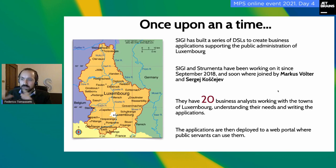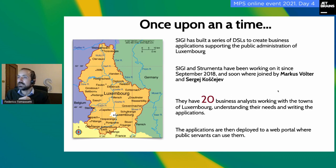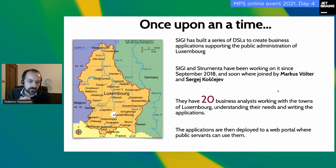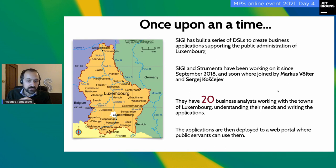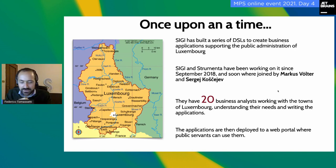Alex already very well displayed the example. Just to say a couple of things about the project for people who connected late or will watch this later on YouTube: once upon a time, Ziggy decided to build this DSL to create business applications for the public administration of Luxembourg. I flew there in September 2018. We had a few meetings and were soon joined by Markus Wolter and Sergey Kosheyev, and we built this DSL. I knew that 20 business analysts were using this DSL, but Alex said that now there are 40 to 50 persons using it — the number is growing.